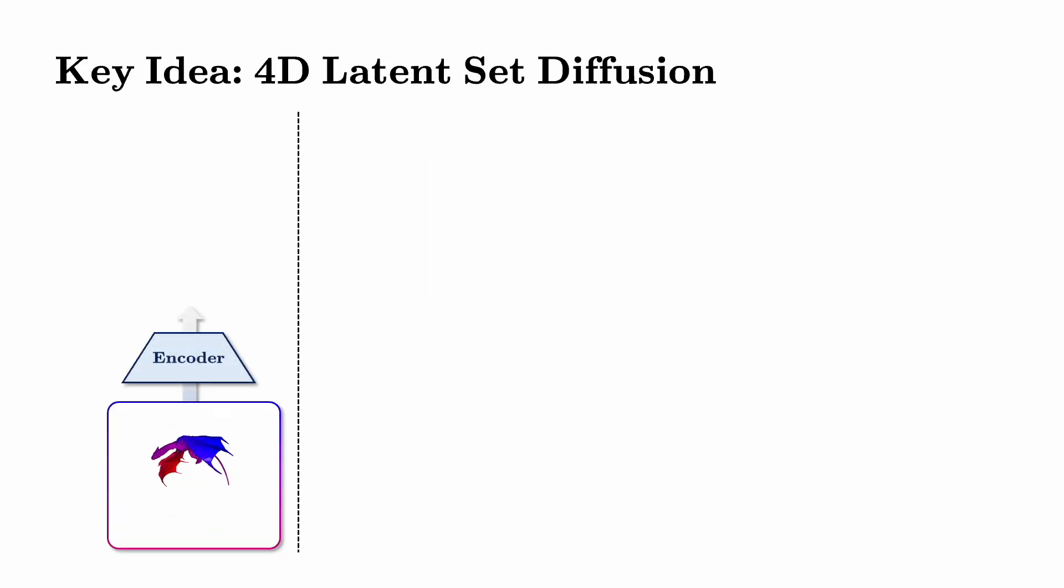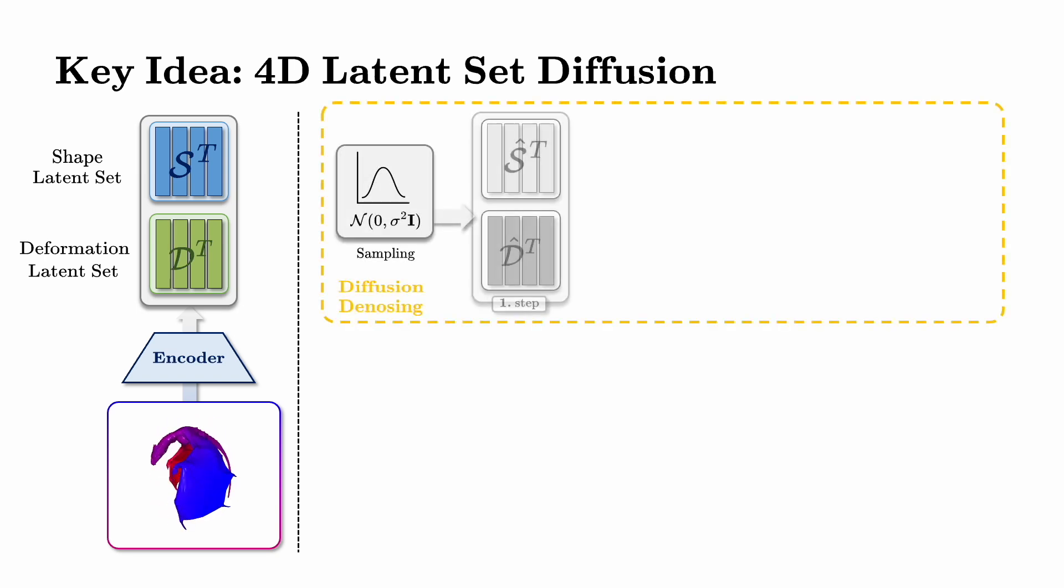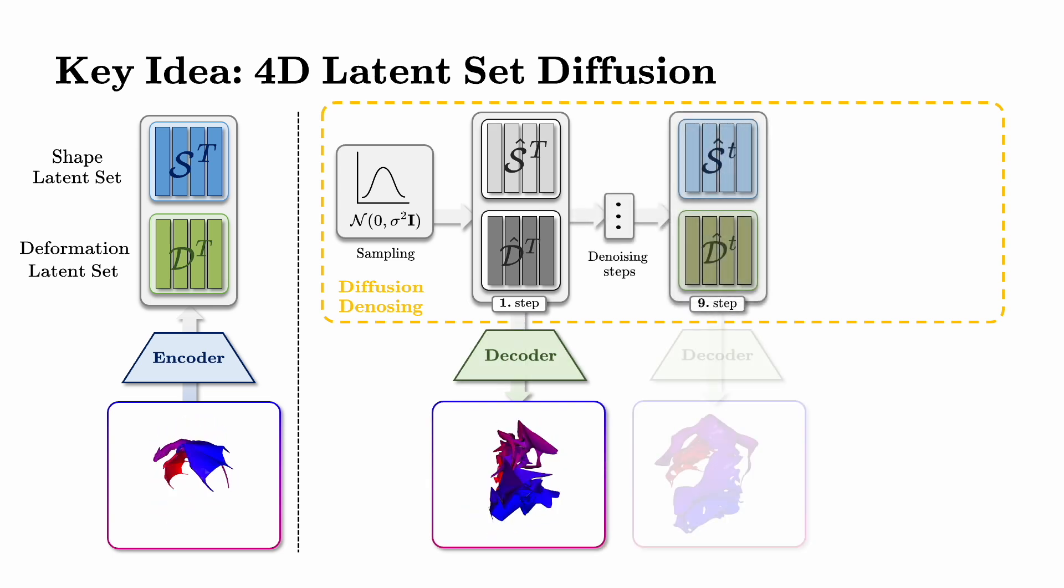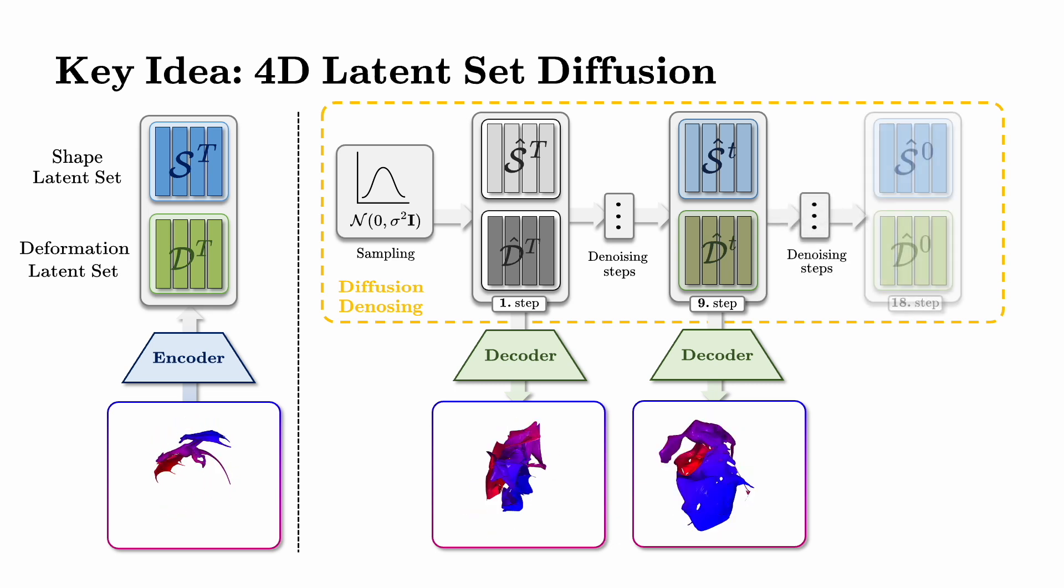To address these challenges, we parameterize 4D dynamics with sets of shape and deformation latent vectors. We introduce a 4D latent set diffusion model, which explicitly learns the shape and motion distribution of non-rigid objects through an iterative denoising process of latent vector sets.